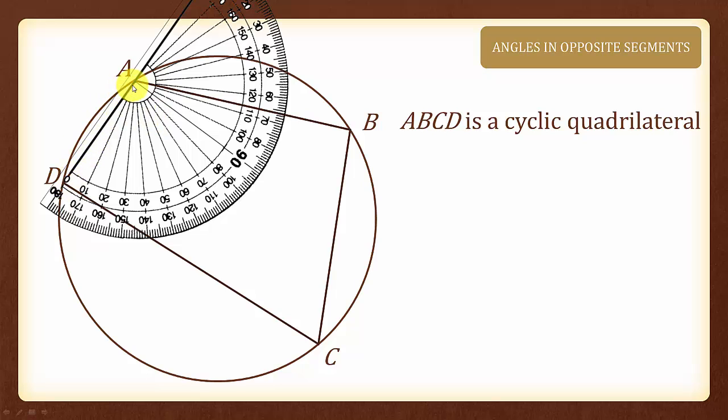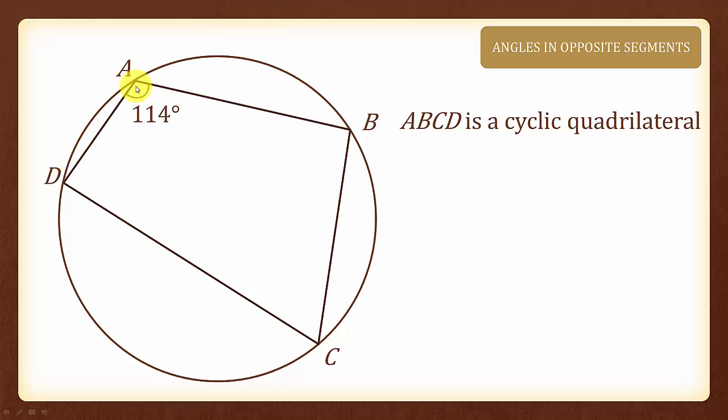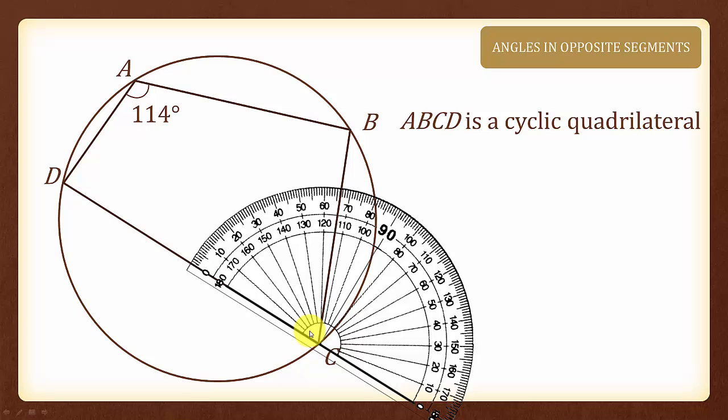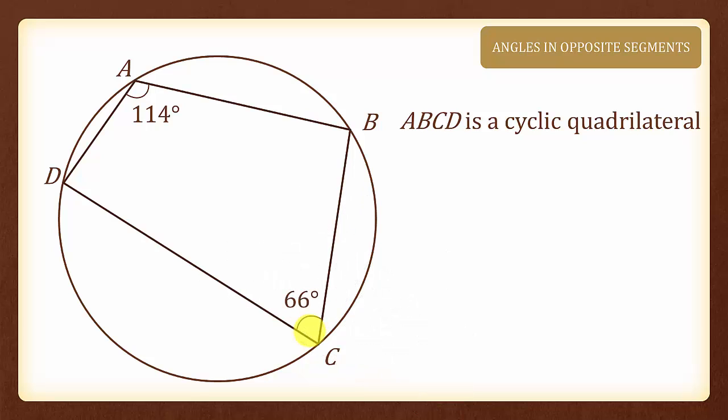We will start off by measuring angle A here, and angle A is 114 degrees. Next, we will measure angle C here, and angle C is 66 degrees. Do you notice anything about these two angles?